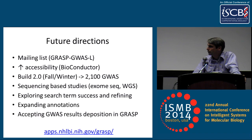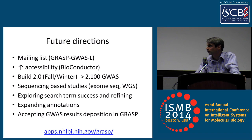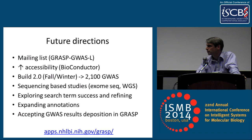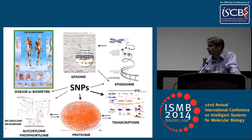Future directions: we have a mailing list, and we're interested in getting this out there for people to use in their own annotation. Someone's working on a Bioconductor package. We have a build 2.0 that we hope will release in fall or winter, covering about 2,100 GWAS. Looking at sequencing-based studies — the truth is there aren't that many out there yet because of costs, so I don't think we're there yet in terms of utility. We're trying to refine the search terms and accepting people to deposit results if they wish. I think it's the group of bioinformaticists to really start to connect some of the dots between all of these pieces.